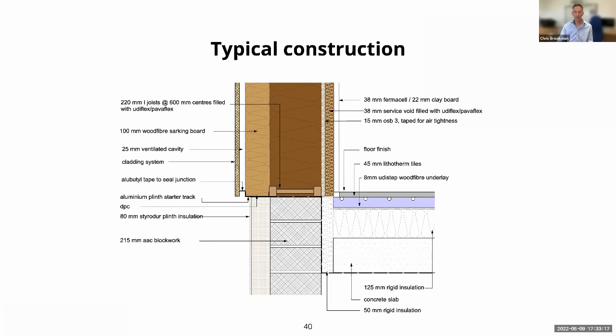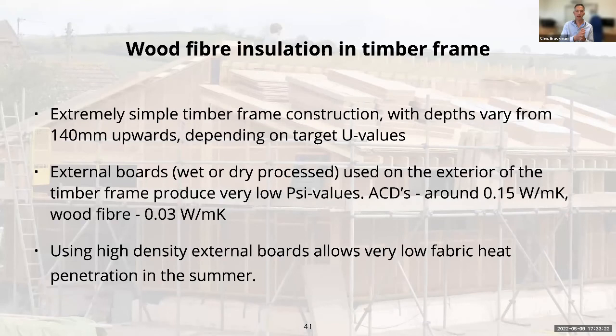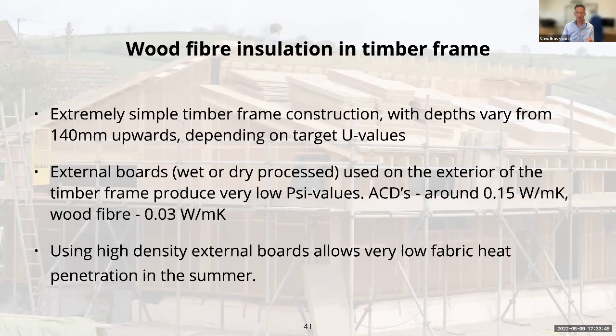Typically for extensions and standard construction, a 140 mm frame is the default. With 60 to 100 mm boards you can get U-values between about 0.2 and 0.16 — pretty good for extensions. For new builds or anything towards passive house standard, you're generally looking at a 200 mm timber frame. We recommend roughly one-third wood fibre board and two-thirds flexible wood fibre, which gives a good balance between U-value and ability to keep the building cool in the summer.